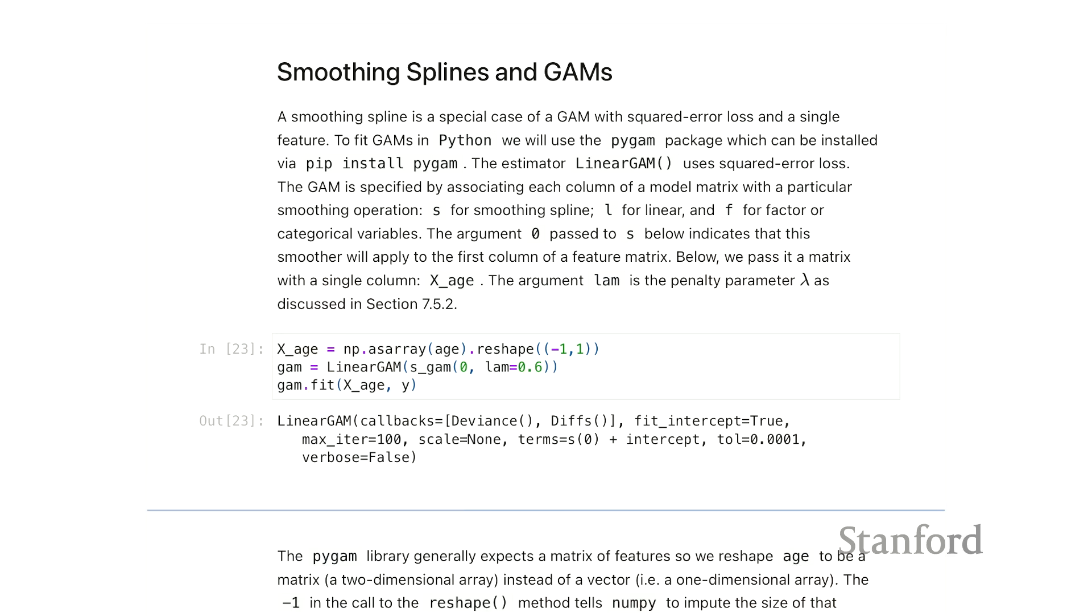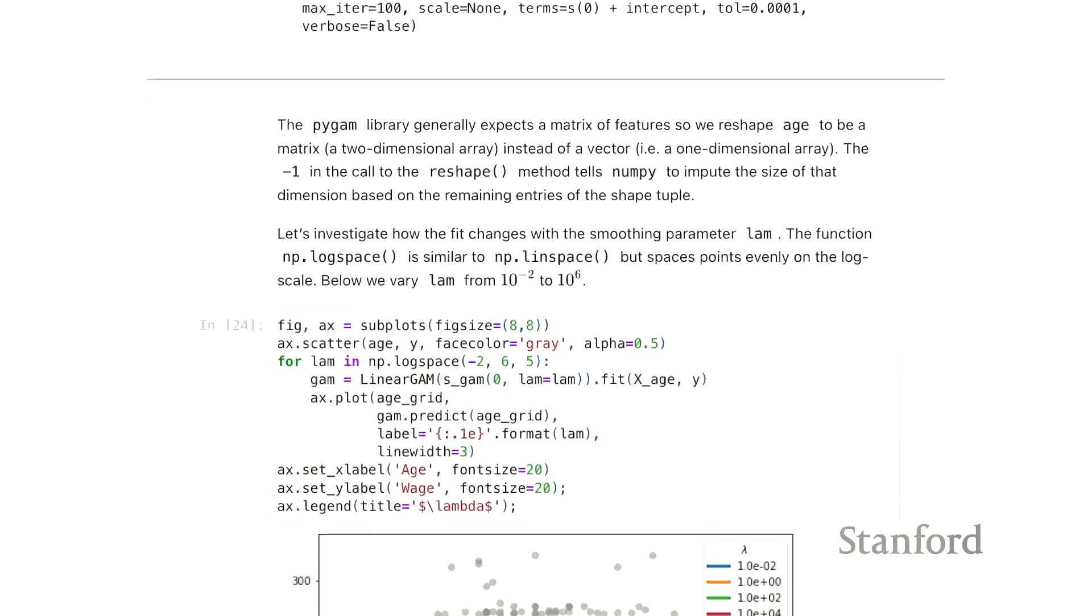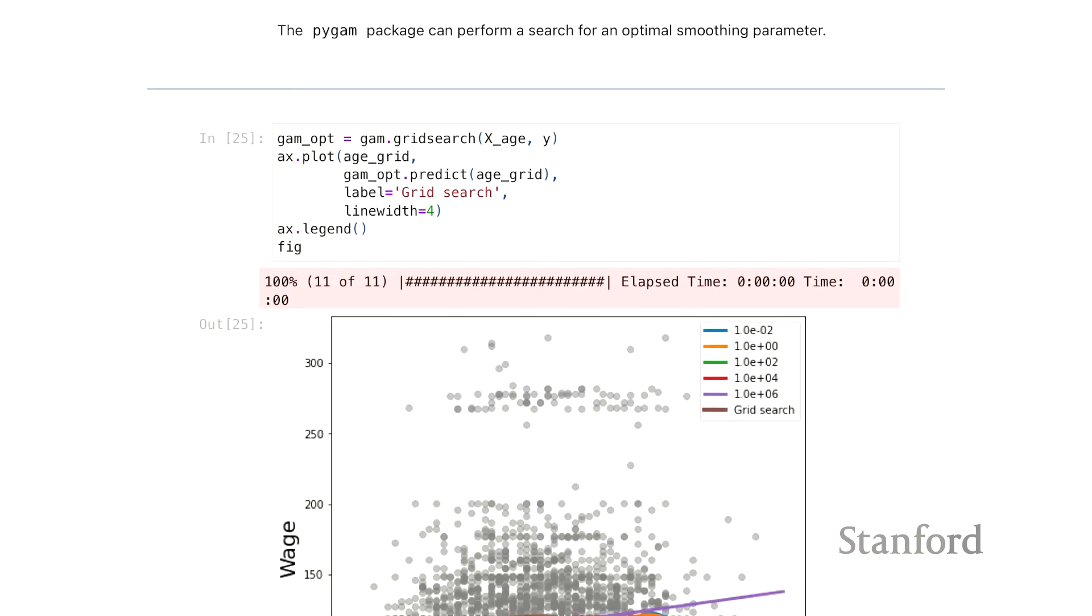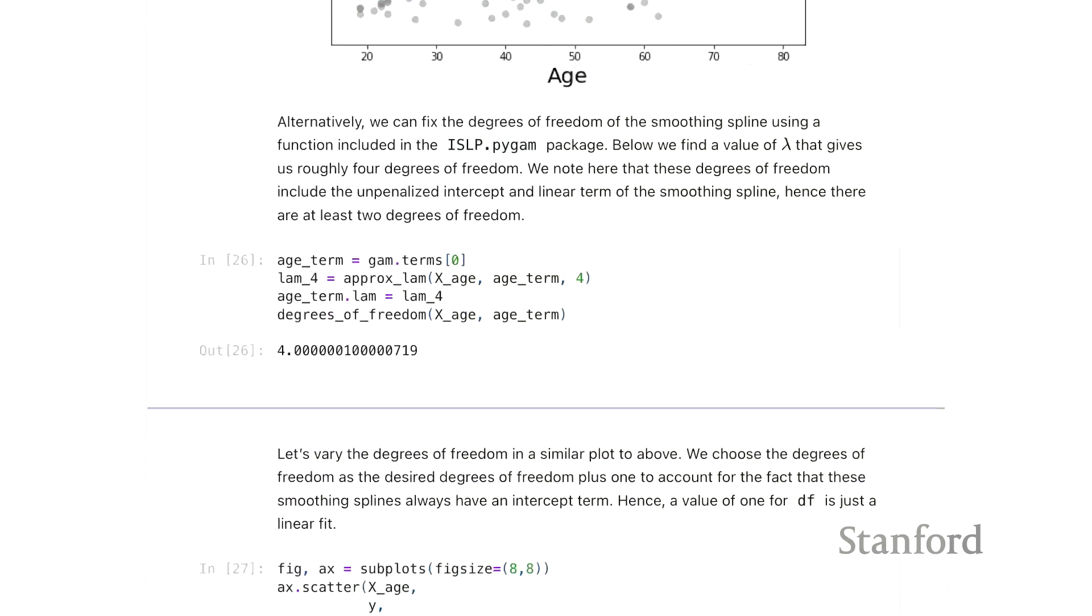The first part of this section of the lab goes through something similar to what we saw for just having modeling wage as a function of age. We're going to skip that to talk about the more interesting aspect of GAMs or additive models, that is when we include more than one feature.